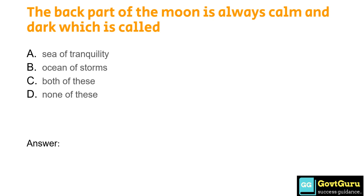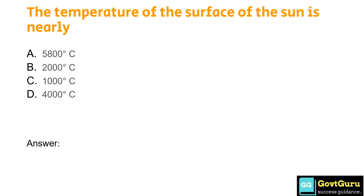The dark part of the moon which is always calm and dark is called: Option A: Sea of Tranquility, Option B: Ocean of Storms, Option C: Both of these, Option D: None of these. The answer is Option A, Sea of Tranquility. The temperature of the Sun's surface is: Option A: 5800 degrees centigrade, Option B: 2000 degrees centigrade, Option C: 1000 degrees centigrade, Option D: 4000 degrees centigrade. The answer is Option A, 5800 degrees centigrade.